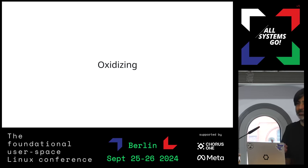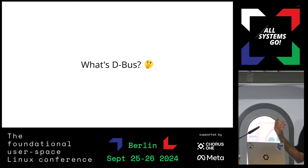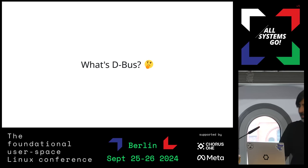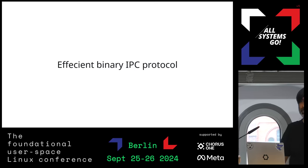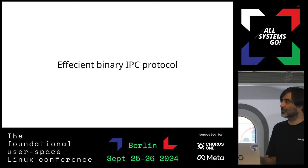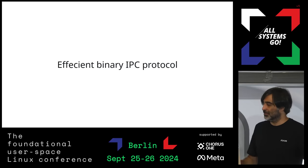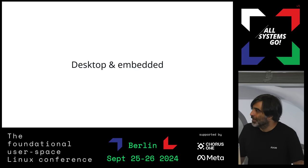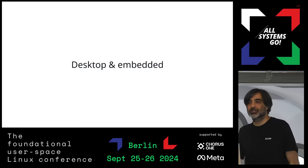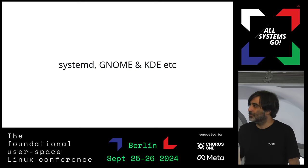I thought: what if we oxidize it — meaning port it to Rust — and what would it take? I was at a hackfest, and before I get to that, you might be asking what DBus is. Here's a quick introduction: it's an extremely efficient binary protocol for IPC — interprocess communication. You can use it for RPC too, but it's not really designed for that, and security is harder to ensure if you use it beyond IPC.